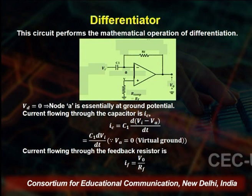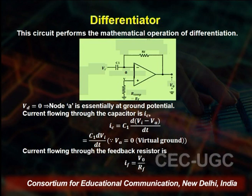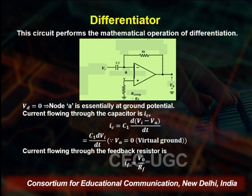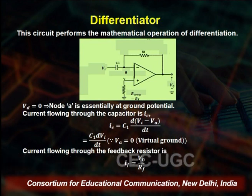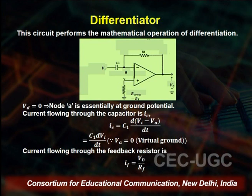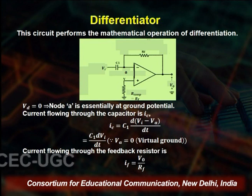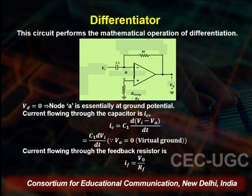The non-inverting terminal of the op-amp is grounded via a resistance. This resistance at the ground is utilized to reduce the bias current problems. Looking at node A, it is essentially at ground potential since we have already discussed and understood it from the concept of virtual ground.